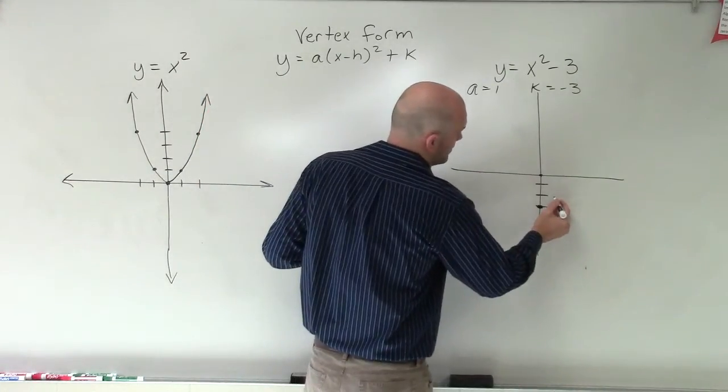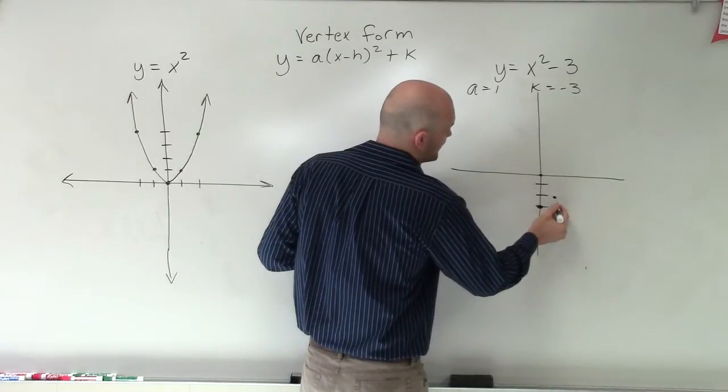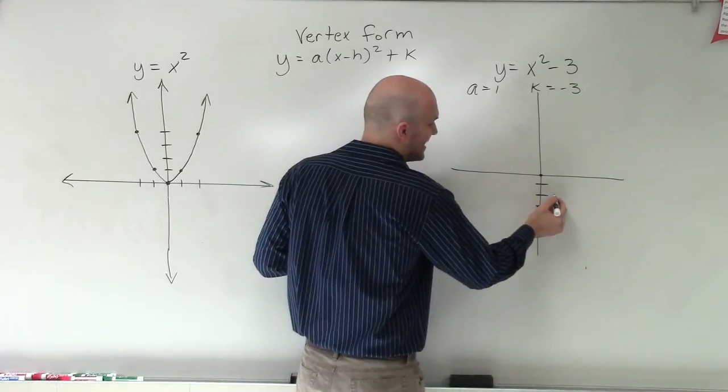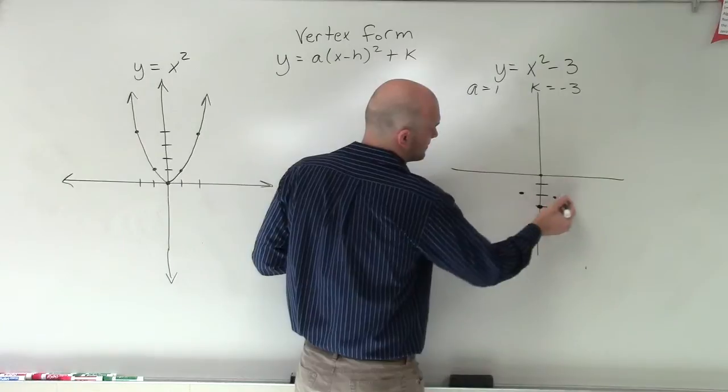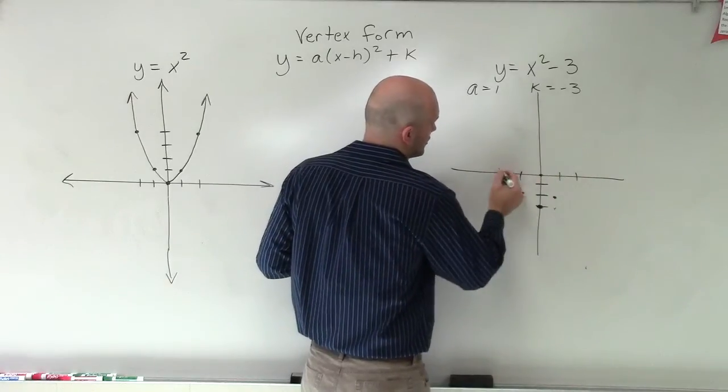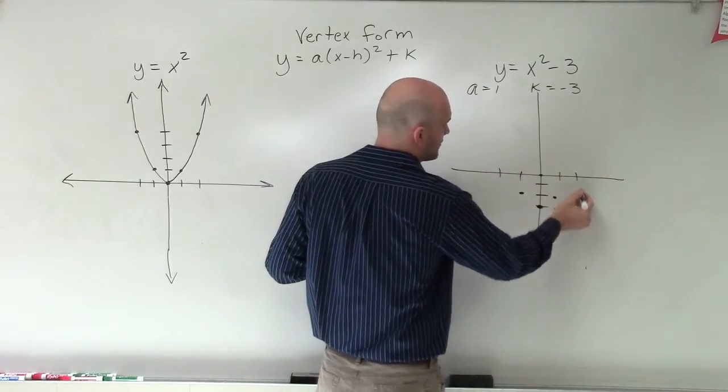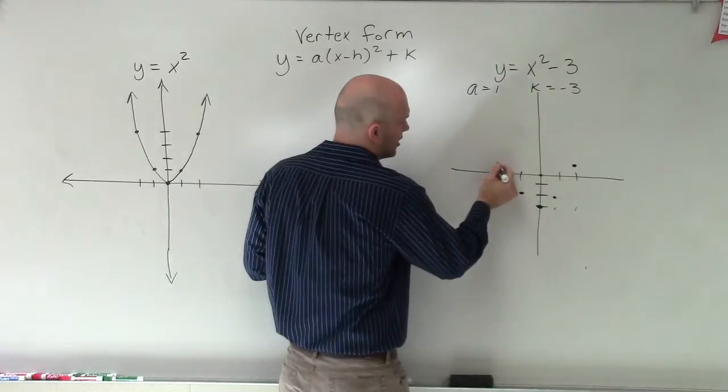So I'm going to go left 1, up 1. Right 1, left 1, up. And then I'll go over 2, up 4. Left 2, up 4.